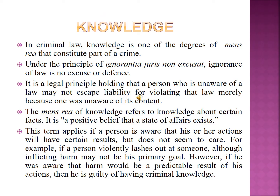The third element of mens rea is knowledge. It comes under the principle of 'ignorantia juris non excusat' — that ignorance of law is no excuse or defense. A person who is unaware of a law may not escape liability for violating that law merely because one was unaware of its content. The mens rea of knowledge refers to knowledge about certain facts — it is a positive belief that a state of affairs exists. For example, if a person violently lashes out at someone, inflicting harm may not be his primary goal; however, if he was aware that harm would be a predictable result of his action, then he is guilty of having criminal knowledge.